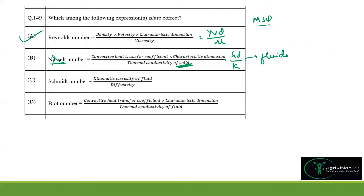Option C: Schmidt number is equal to kinematic viscosity divided by diffusivity, which is correct. Hence option C is correct.